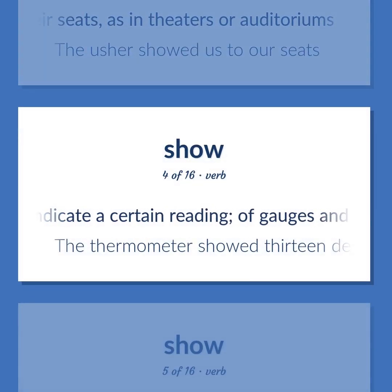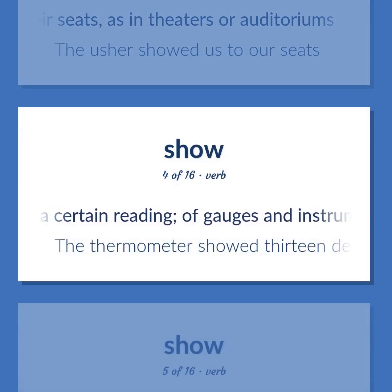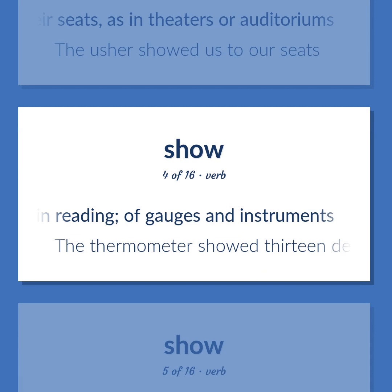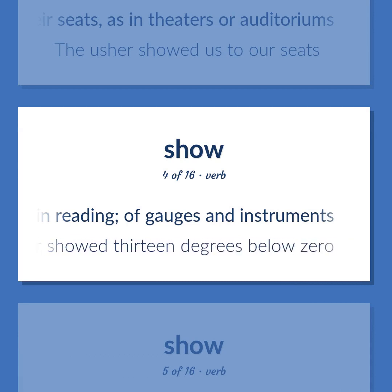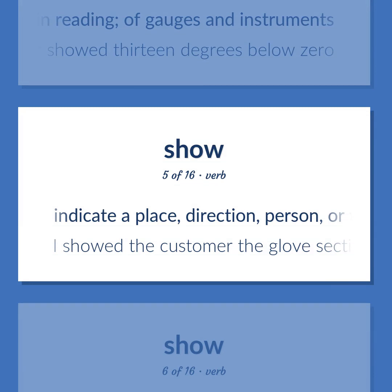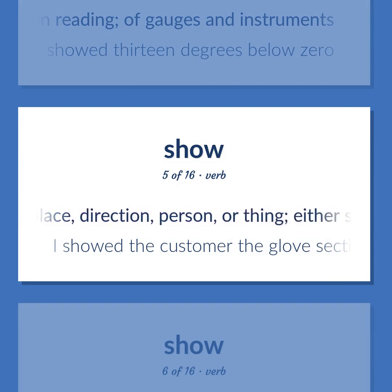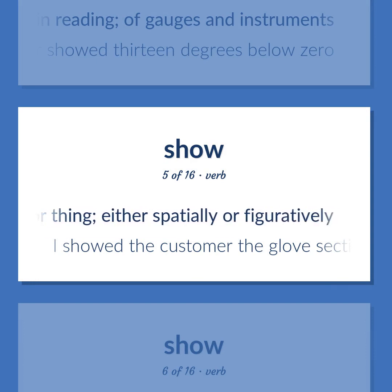Show (verb): Indicate a certain reading of gauges and instruments. Example: The thermometer showed 13 degrees below zero. Indicate a place, direction, person, or thing, either spatially or figuratively. Example: I showed the customer the glove section. Also, show in, or as in, a picture.